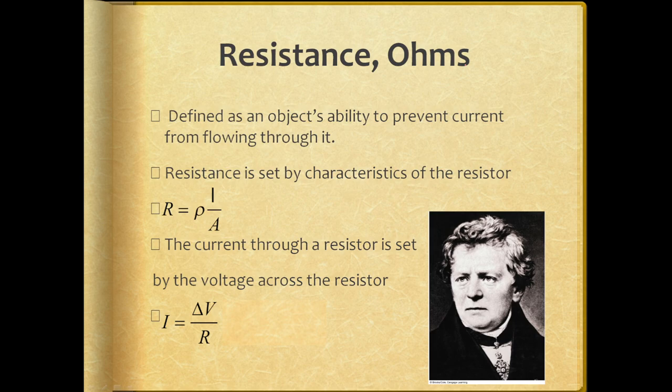An object's resistance is additionally a measure of how much energy it tends to take from electric current. The more resistance something has, the harder it is for current to try to be forced through it, and the current tends to lose more energy if it tries to pass through that object. You could hypothetically force electric current to travel through rubber — it just wouldn't work very well, and the rubber would absorb a lot of energy. Because metal has very low resistivity, electricity doesn't lose a whole lot of energy as it flows through metal, which is why we make most of our wires out of metal.